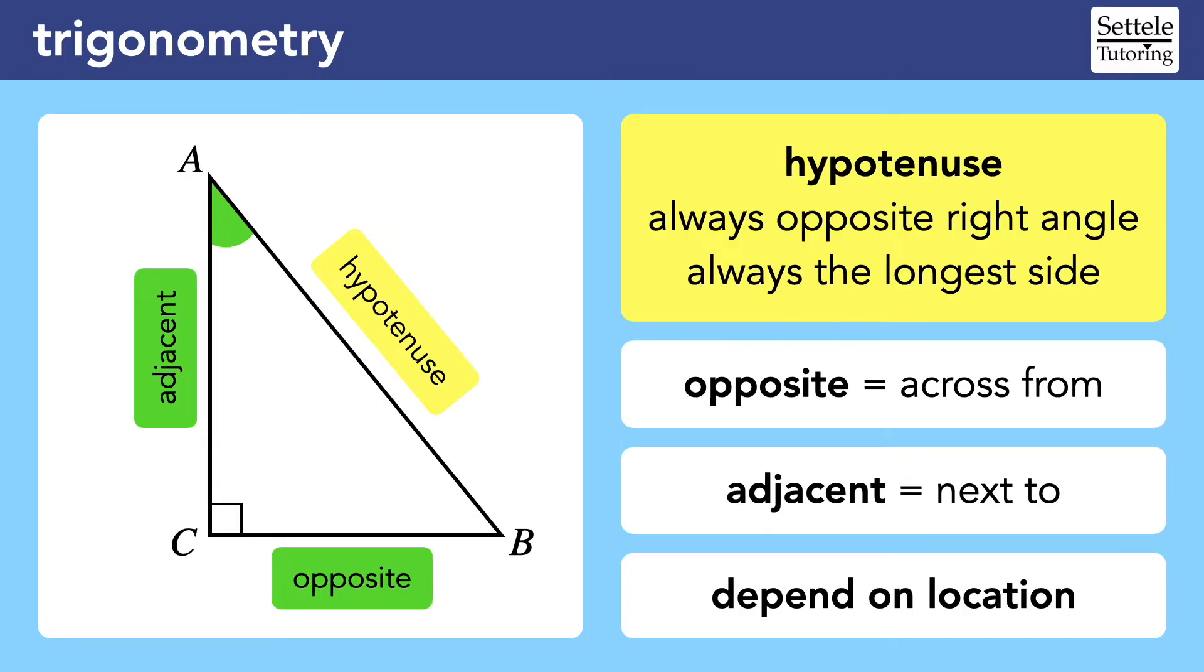You might be wondering what would happen if we focused on angle C, the right angle, but you don't have to worry about that. For SAT trigonometry, we will always focus on the two acute angles of a right triangle.